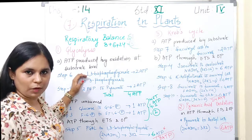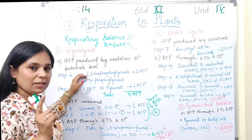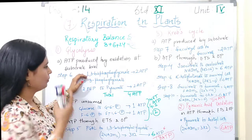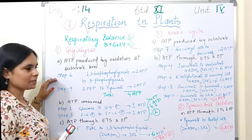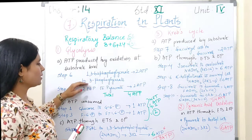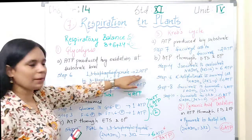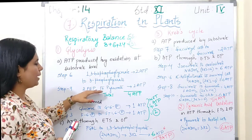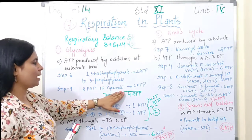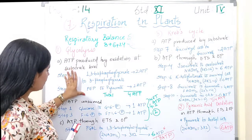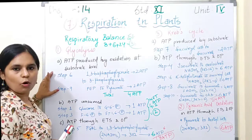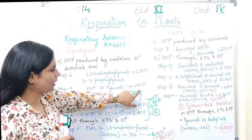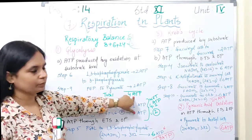Substrate ki wajah se jo phosphorylation ho raha hai, ATP jo ban raha hai payoff phase mein glycolysis ke. Step 6 pe, 1,3-bisphosphoglycerate se 3-phosphoglycerate jab banta hai, us samay 2 ATP banta hai. And 2-phosphoenolpyruvate se pyruvate banta hai, that time also 2 ATP — so total 4 ATP substrate ki wajah se banega.